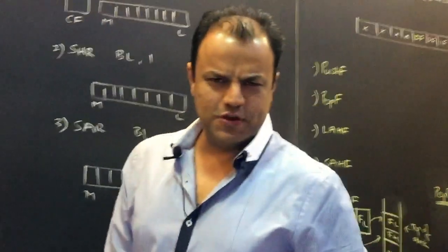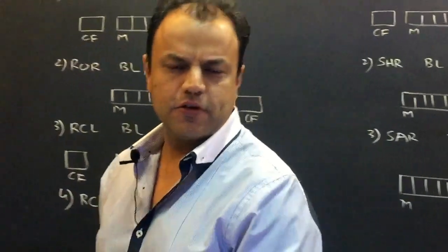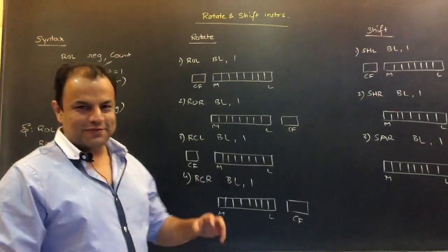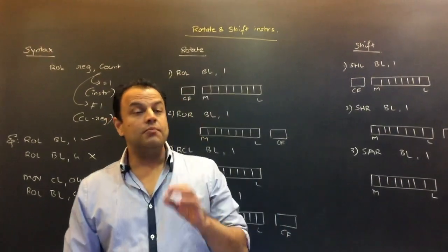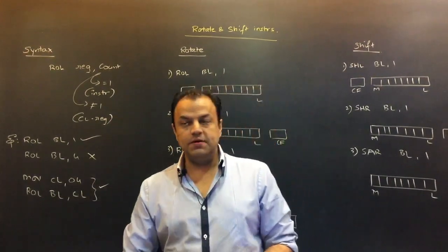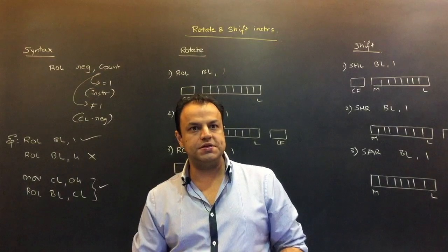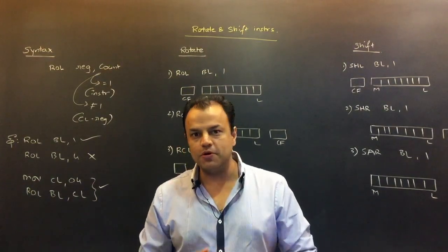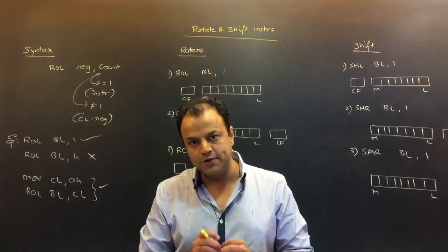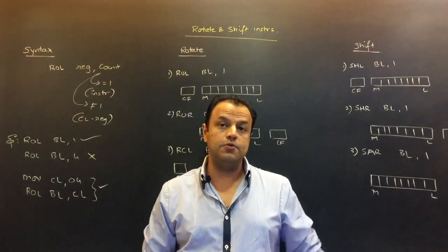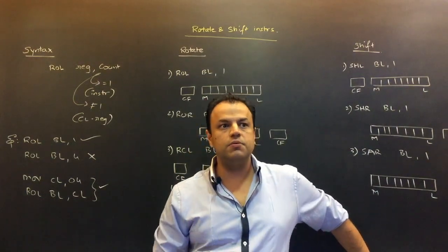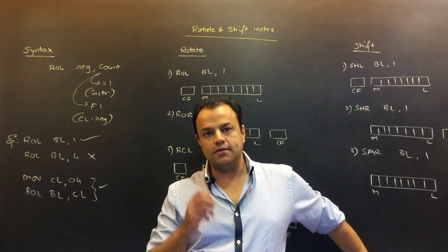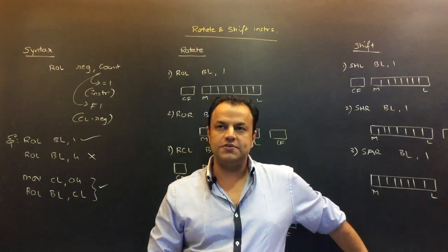The processor control group consists of instructions by which we can modify the flags or directly operate on the flags. But first, let's look at the rotate and shift instructions. These are very simple instructions, but they're very useful. There are situations where if you don't know these instructions, you won't be able to get out of them. There are peculiar exam questions like: write a program to find the number of even and odd numbers, positive and negative numbers, or the number of ones in a number. To solve those questions, we need to know these instructions.